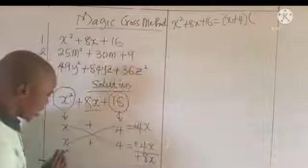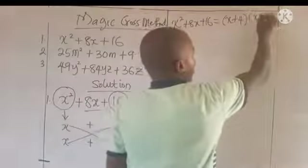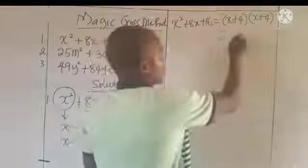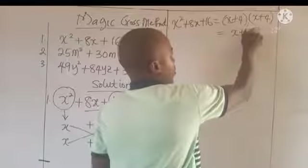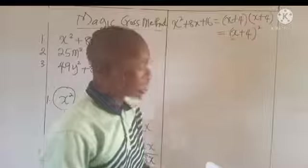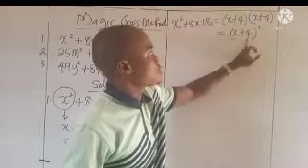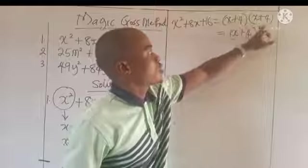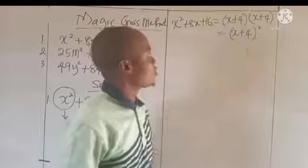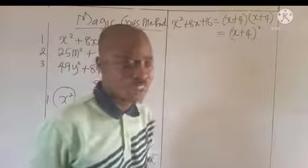So completely, we are going to have x plus 4 raised to the power 2. You can see that x plus 4 times x plus 4 — because we have x plus 4 and x plus 4, and this is multiplication between them — so x plus 4 all squared is the factor of x squared plus 8x plus 16.